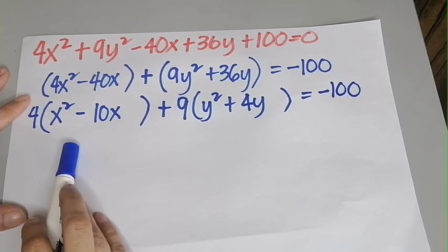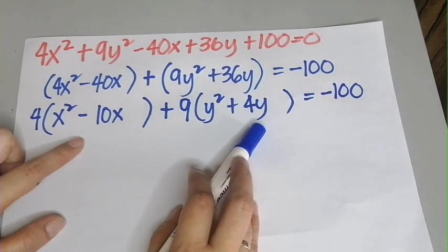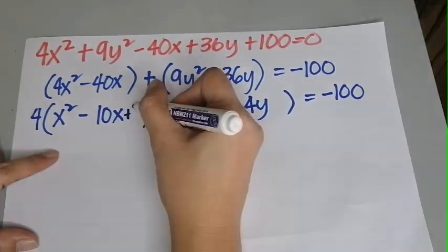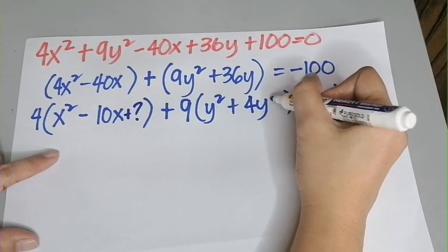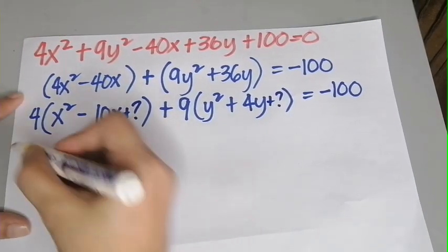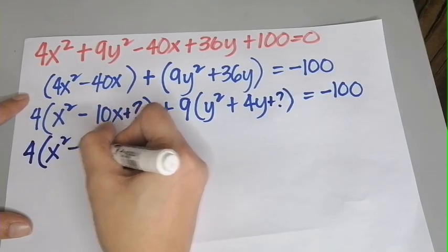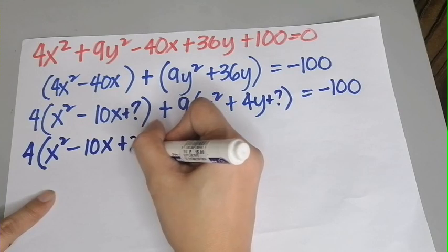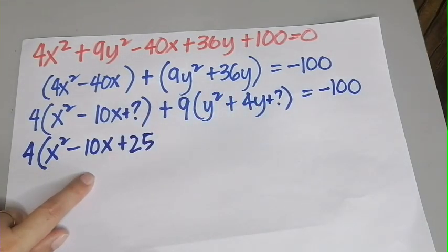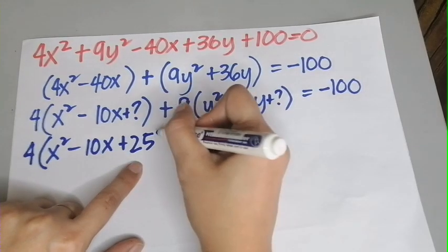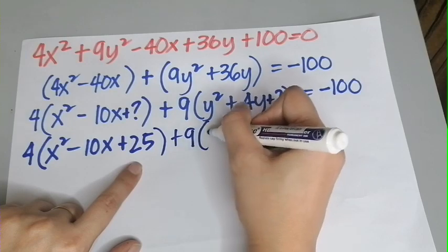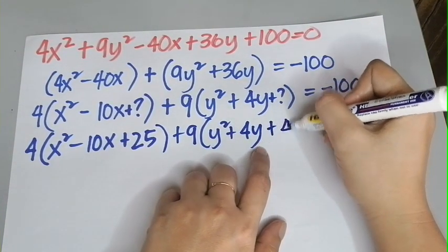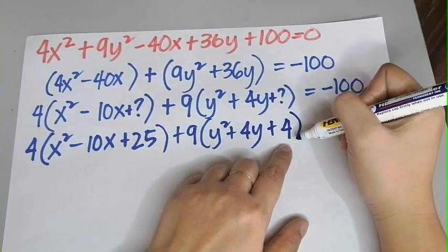Our purpose is to make each group a perfect square trinomial, so we complete the square. For x squared minus 10x: take 10 divided by 2, squared, which gives 25. For y squared plus 4y: take 4 divided by 2, squared, which gives 4. The equation becomes 4 times (x squared minus 10x plus 25) plus 9 times (y squared plus 4y plus 4) equals negative 100. Since we added values on the left side, we must add the same to the right: 4 times 25 equals 100, and 9 times 4 equals 36.